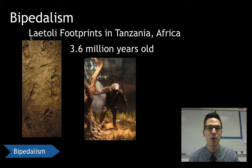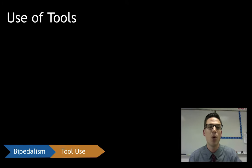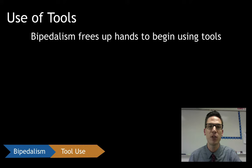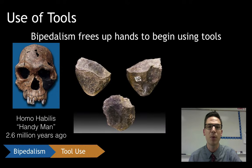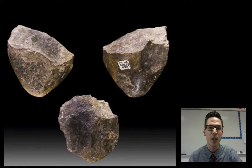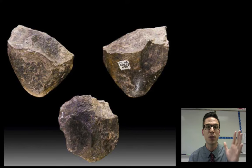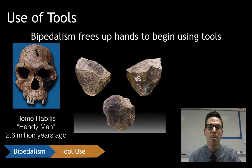Bipedalism eventually led to the freeing up of our hands. Now that we're not walking on our hands and legs, we freed up our hands, leading to our next evolutionary advantage: the use of tools. One of the first hominid species we see using tools is Homo habilis, which translates to 'handyman,' because we find many primitive tools with their bones — not arrows and spears, but just picking up rocks and using them to carve meat off bones. This started changes in diet, hand shape via natural selection, and eventually harnessing fire.